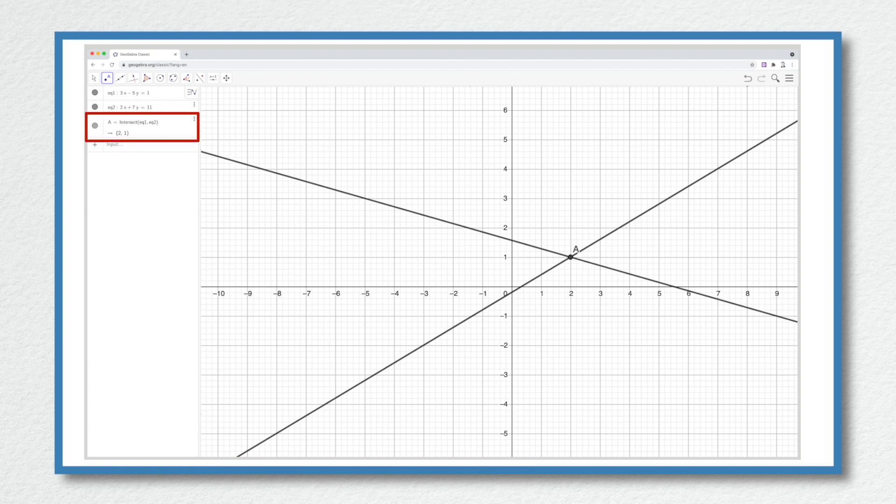We have the point A. Over on the left hand side point A is shown as the intersection between these two lines and it's the point 2, 1. That is x is equal to 2 and y is equal to 1.